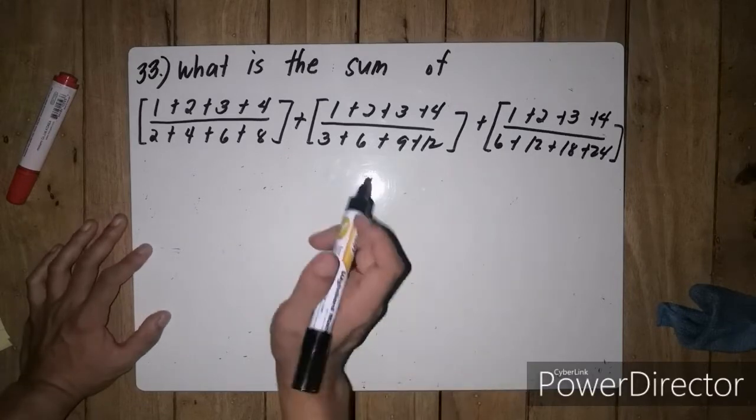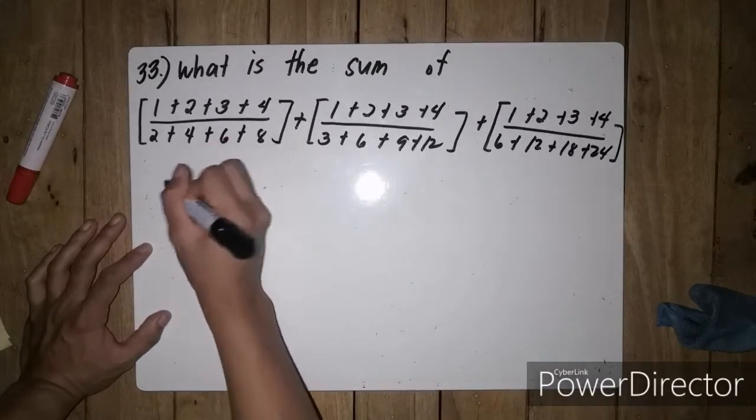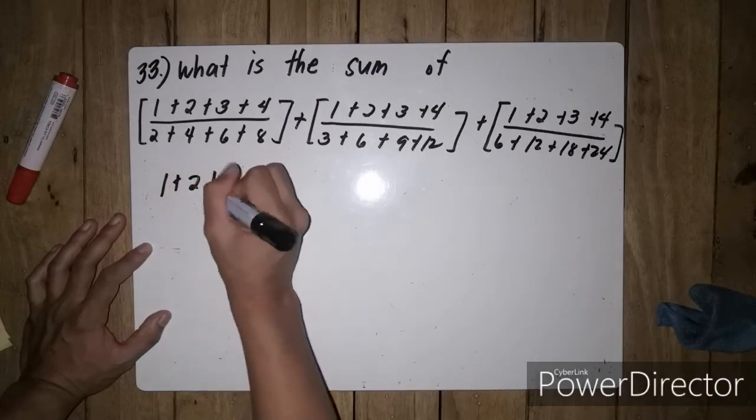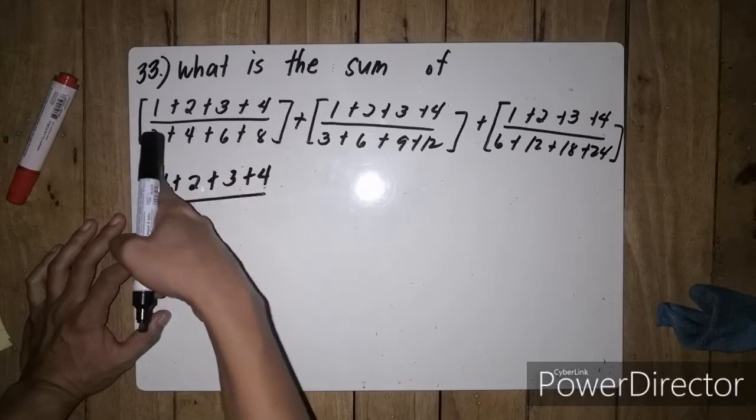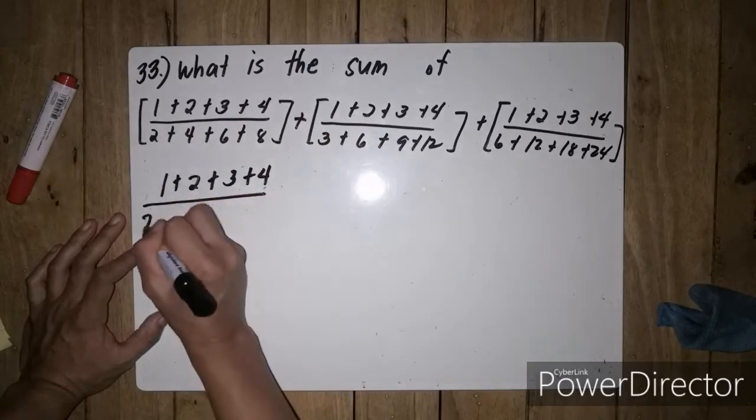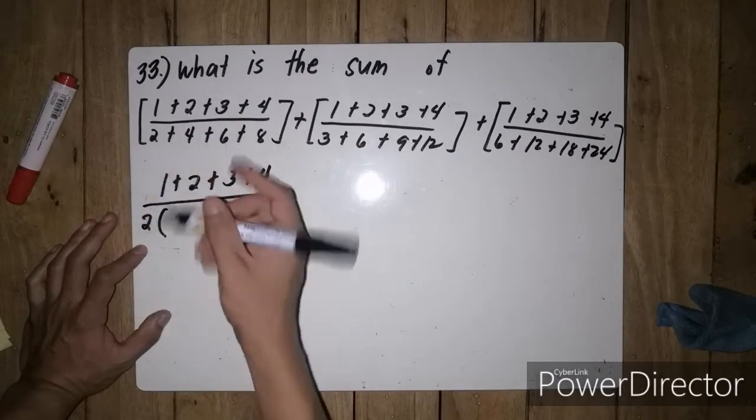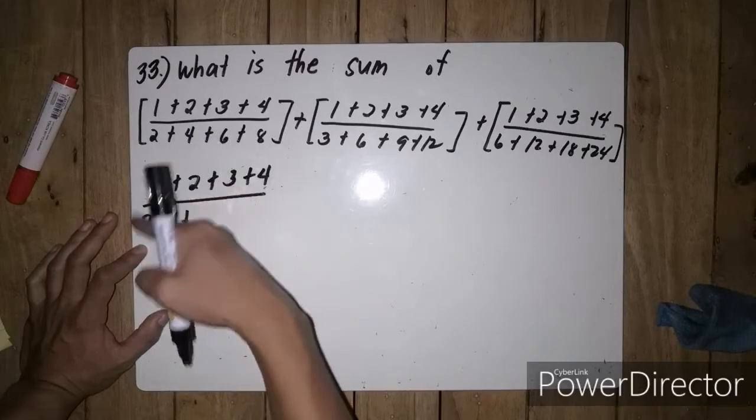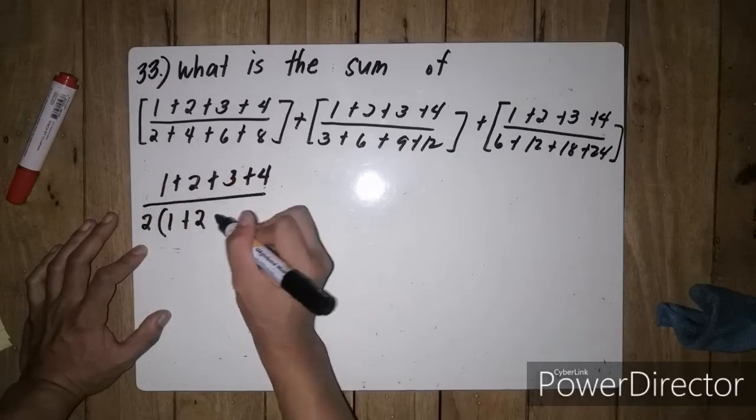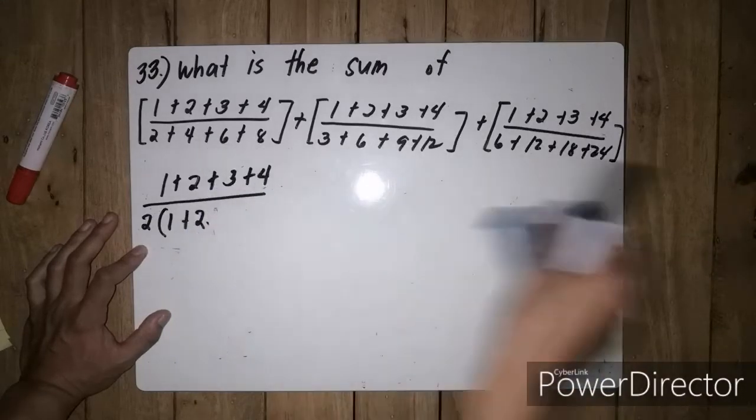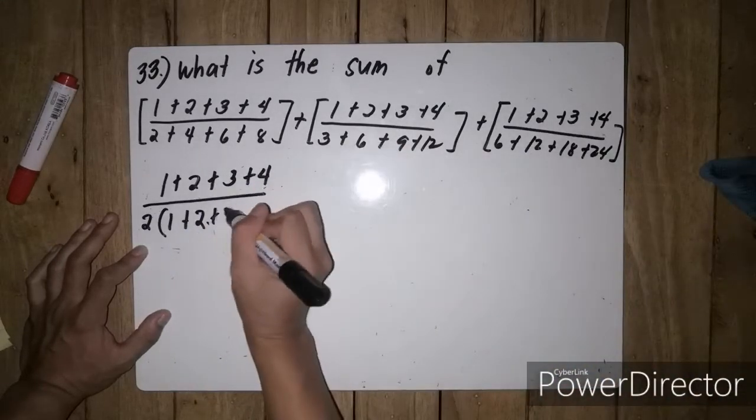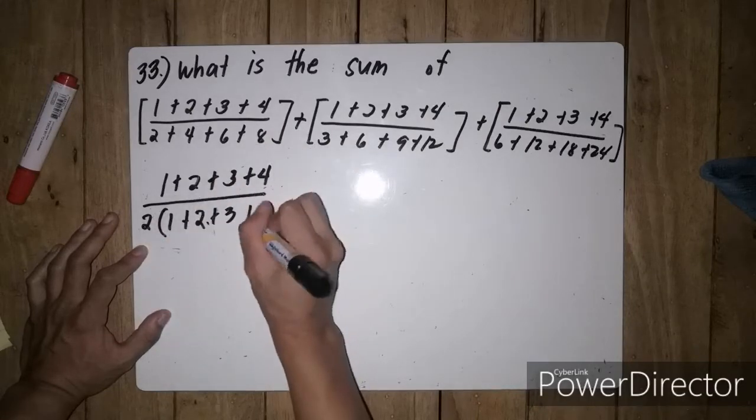So here's what we'll do. We have 1 plus 2 plus 3 plus 4, divided by, since they have a common factor of 2, we'll factor out 2. 2 divided by 2 is 1, 4 divided by 2 is 2, 6 divided by 2 is 3, and 8 divided by 2 is 4.